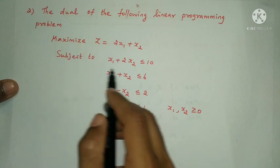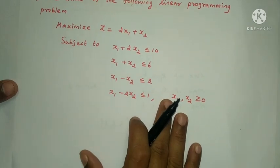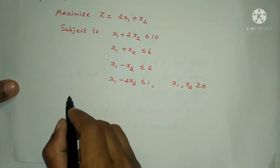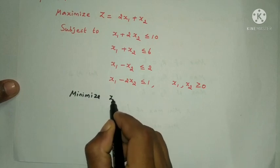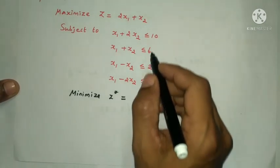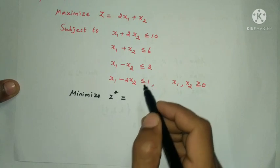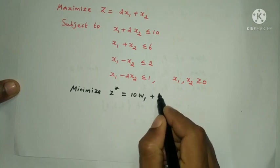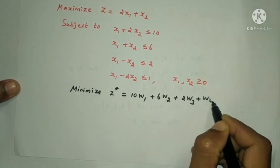Since this is a maximization problem with all constraints of the ≤ type, the dual objective is: minimize w = 10b1 + 6b2 + 2b3 + b4.